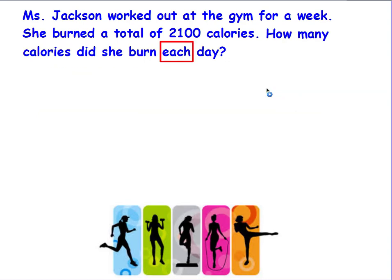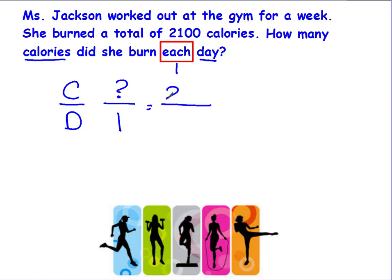I'm going to use the phrasing 'each day.' Just like setting up any other proportion problem, the first thing you need to do is set up your word fraction. What is it asking you to compare? It says how many calories did she burn in a day, so I'm comparing calories to day. The question mark goes with calories because it says how many calories, and the number on the bottom is one for each day. There are seven days in a week, so I put seven there.